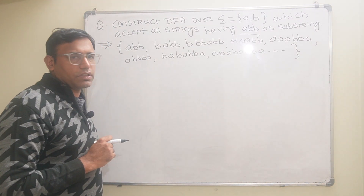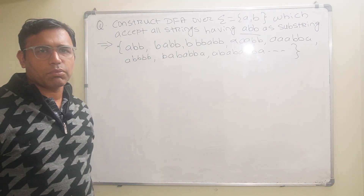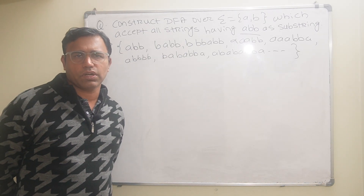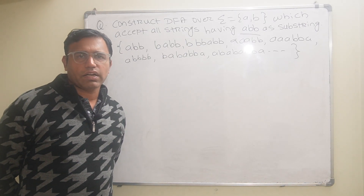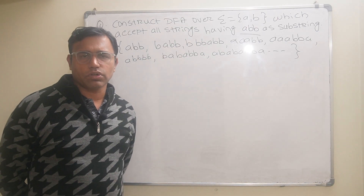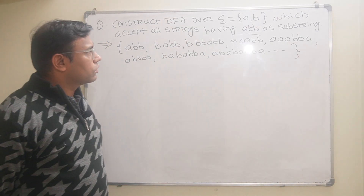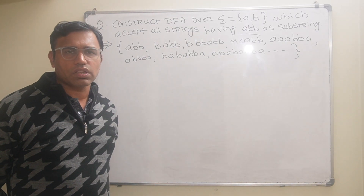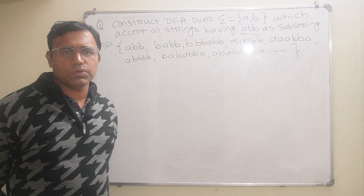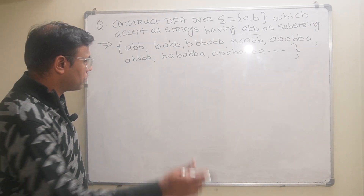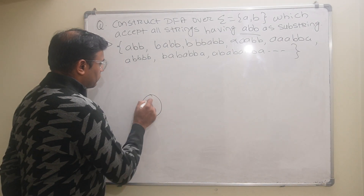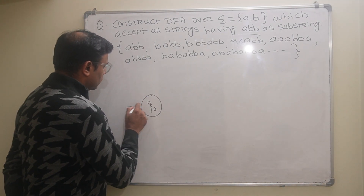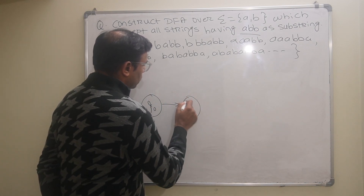The total number of states in the DFA will be the length of the substring plus one, as I mentioned in earlier videos. Here the length of the substring ABB is 3, so the total number of states will be 4. I will draw the states: Q0 will be the initial state, then Q1, Q2, and Q3.